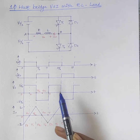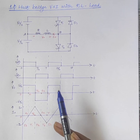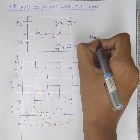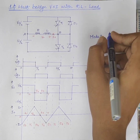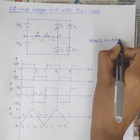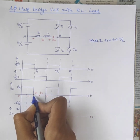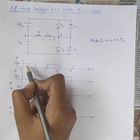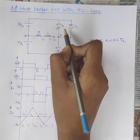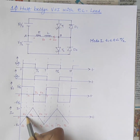The operation of the half bridge inverter with RL load is divided into four modes. Consider Mode 1, the interval T1 to T/2. During this interval, gate pulses are given to thyristor T1, and therefore thyristor T1 is turned on at instant T1.